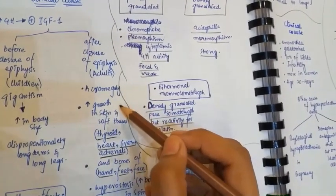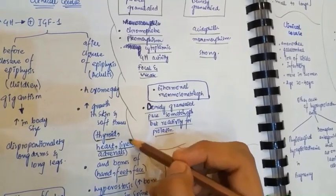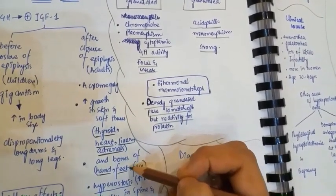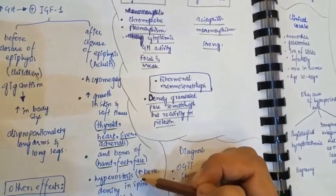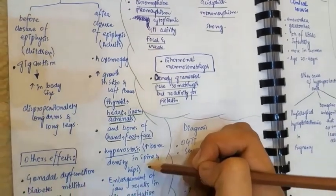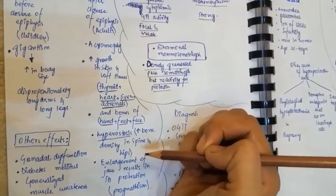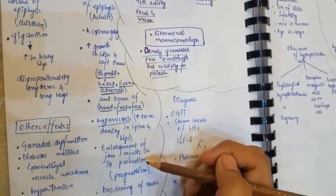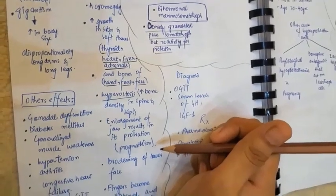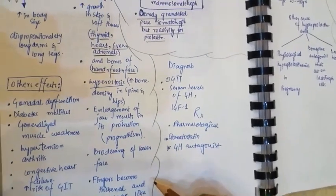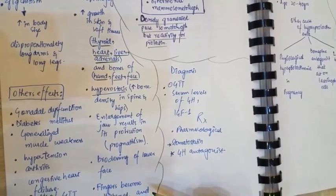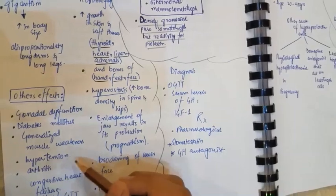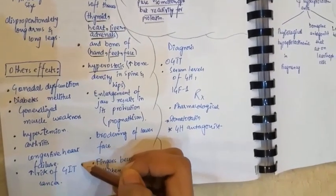In acromegaly, there is increased growth in the skin and soft tissues — including thyroid, heart, liver, and adrenals — and in the bones of the hands, feet, and face. There is hyperostosis, meaning increased bone density in the spine and hips. Prognathism refers to enlargement of the jaw resulting in its protrusion and broadening of the lower face. Fingers become thickened and sausage-like. Other effects include diabetes mellitus, muscle weakness, hypertension, arthritis, congestive heart failure, and increased risk of GI cancer.